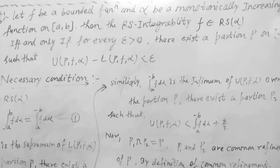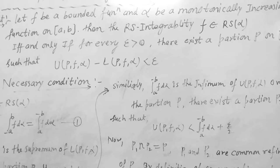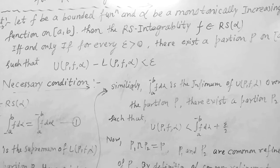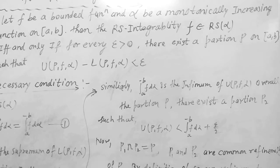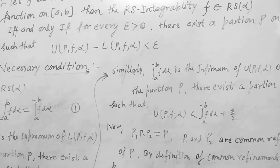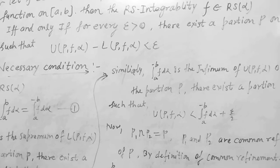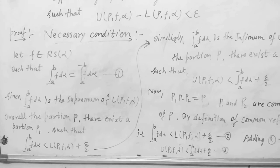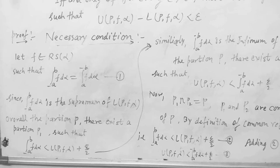if and only if for every ε > 0 there exists a partition P on [a,b] such that U(P,f,α) - L(P,f,α) < ε. Prove necessary condition.